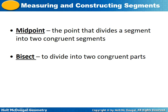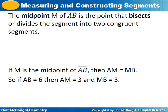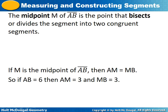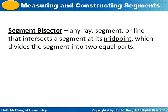Two more terms: midpoint is the point that divides the segment into two congruent segments. Bisect means dividing into two congruent parts. The midpoint of AB is the point that bisects the segment into two congruent segments. If M is the midpoint of AB and AB equals 6, then AM equals 3 and MB equals 3. We can put tick marks on each half to show they're equal. A segment bisector is any ray, line, or segment that intersects a segment at its midpoint, dividing it into two equal parts.